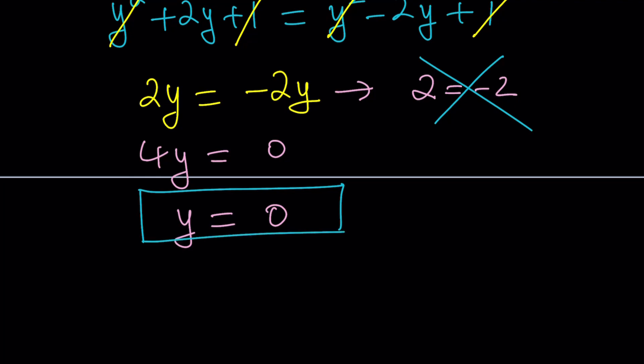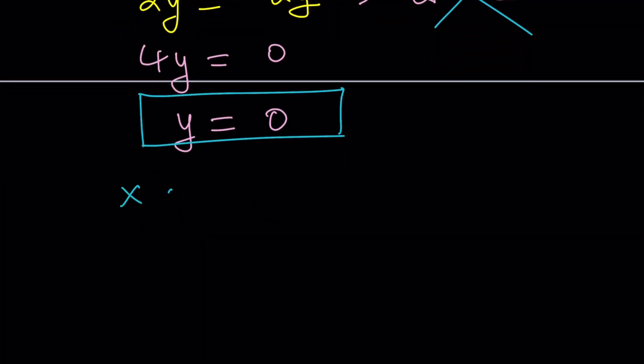So what is that supposed to mean? Let's talk a little bit about what this means because we didn't get any X values. That means X can be what? Anything, right? X can be anything as long as it's real, of course. But Y has to be zero.